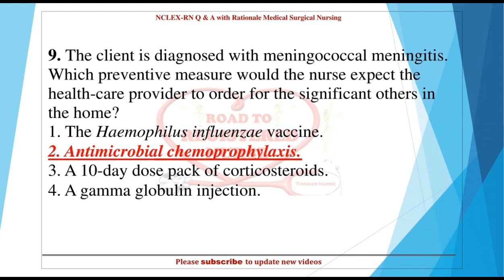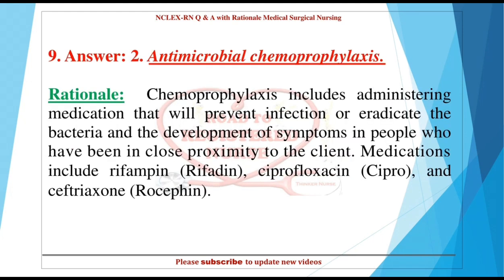Question 9: The client is diagnosed with meningococcal meningitis. Which preventive measure would the nurse expect the healthcare provider to order for significant others in the home? 1. The Haemophilus influenza vaccine. 2. Antimicrobial chemoprophylaxis. 3. A 10-day dose pack of corticosteroids. 4. A gamma-globulin injection. Answer: 2. Antimicrobial chemoprophylaxis. Rationale: Chemoprophylaxis includes administering medication to prevent infection or eradicate bacteria and prevent development of symptoms in people in close proximity to the client. Medications include rifampin, ciprofloxacin, and ceftriaxone.